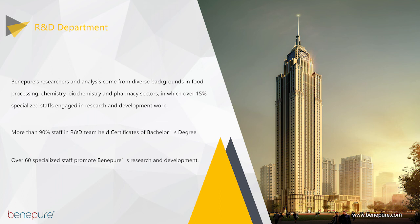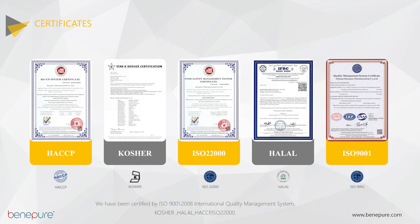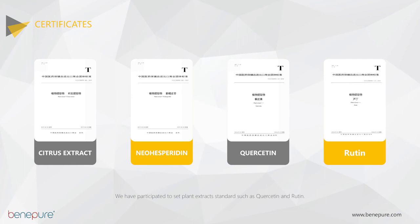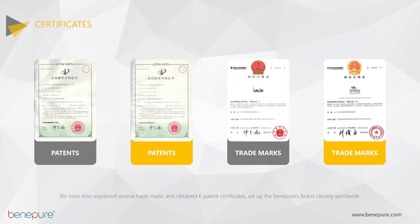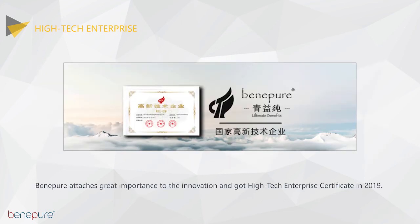The strong ability of R&D enables us to develop more effective and professional healthy ingredients for pharmaceutical, functional food, cosmetics and feed industries. Our facilities have been certified by ISO, Kosher, Halal and HACCP certificates. We have participated in setting plant extract standards for quercetin, rutin, neohesperidin and citrus extracts synephrine. We have registered several trademarks and obtained six patent certificates, and we have been issued a high-tech enterprise certificate for our commitment to innovation.